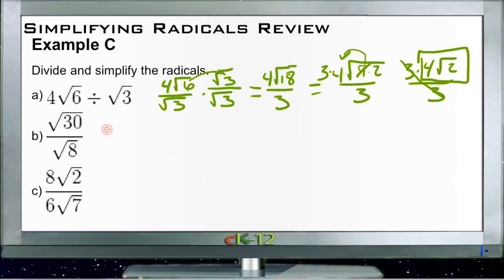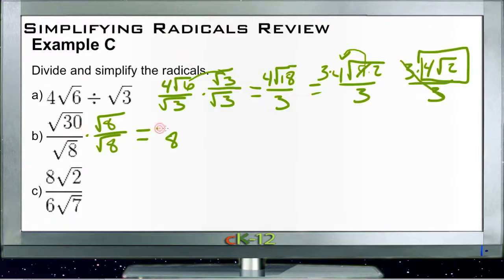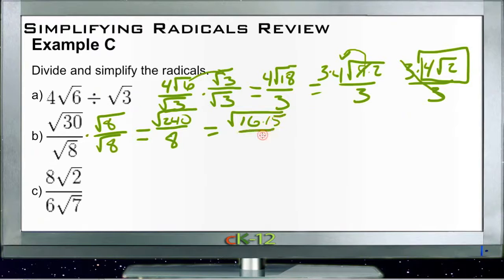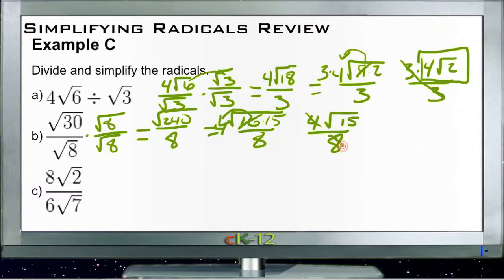For root 30 over root 8, we multiply top and bottom by root 8. We get root 30 times root 8, which is root 240, over 8. Root 240 breaks down to 16 times 15, so that's square root of 16 times 15 over 8. The square root of 16 is 4, so that gives us 4 square roots of 15 over 8. Then 4 cancels into 8, giving us square root of 15 over 2.